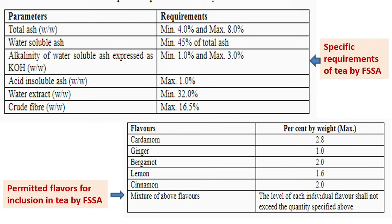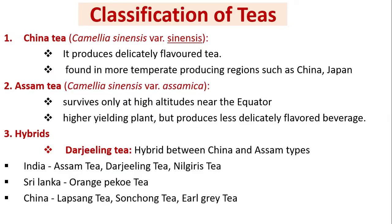Permitted flavors for inclusion in tea by FSSAI: cardamom 2.8%, ginger 1%, bergamot 2%, lemon 1.6%, cinnamon 2%, and mixtures of the above flavors. The level of each individual flavor shall not exceed the quantity specified.